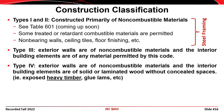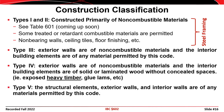Type 4 construction is characterized by buildings where the exterior walls are again made of non-combustible materials and the interior building elements are either lumber, laminated wood, or timber. In Type 5 construction, the structural elements, exterior walls, and interior walls are made of any material permitted by the code.